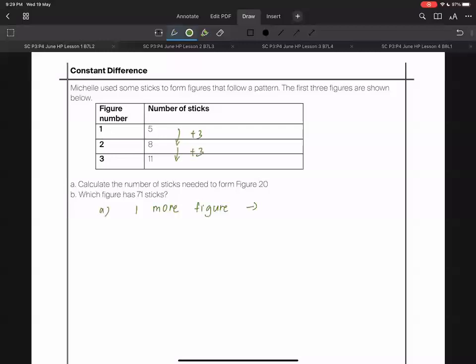In this case we have three more sticks. From figure one to figure 20, how many more figures is that? Figure 20 minus figure one, that would be 19 more figures.